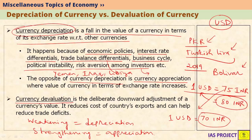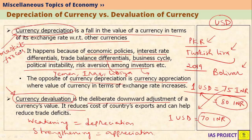Now let's see what currency devaluation means. Currency devaluation is a deliberate downward adjustment of a currency's value — the country's currency value is reduced with respect to other currencies, not because of market forces, but because of intervention by the central bank. For example, in India, if RBI directly intervenes in the market and reduces the value of the rupee against the US dollar, that reduction is called devaluation. The key difference is that depreciation happens because of market forces and is not deliberate, whereas devaluation is done by the government or central bank and is a deliberate action.